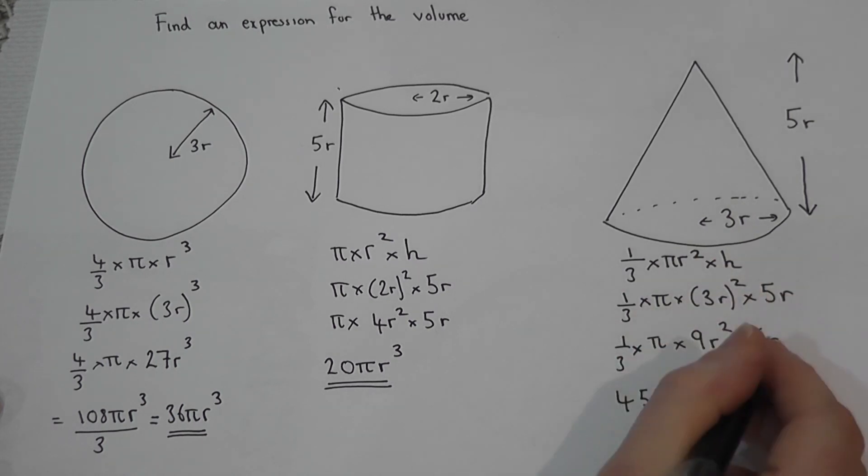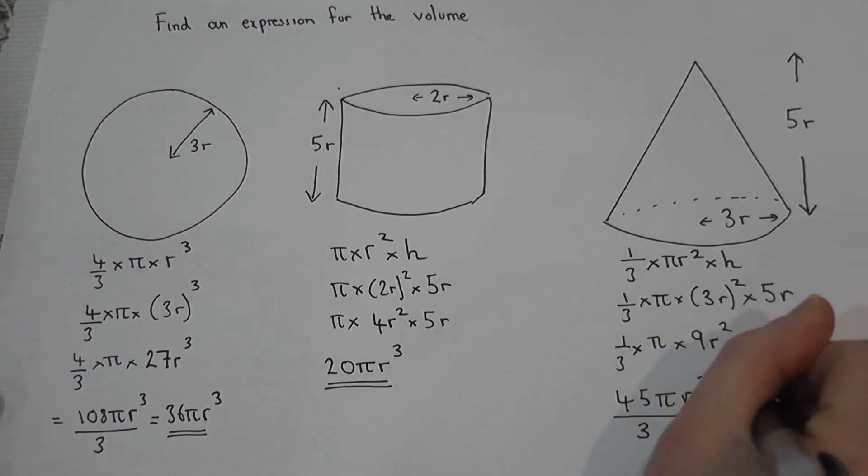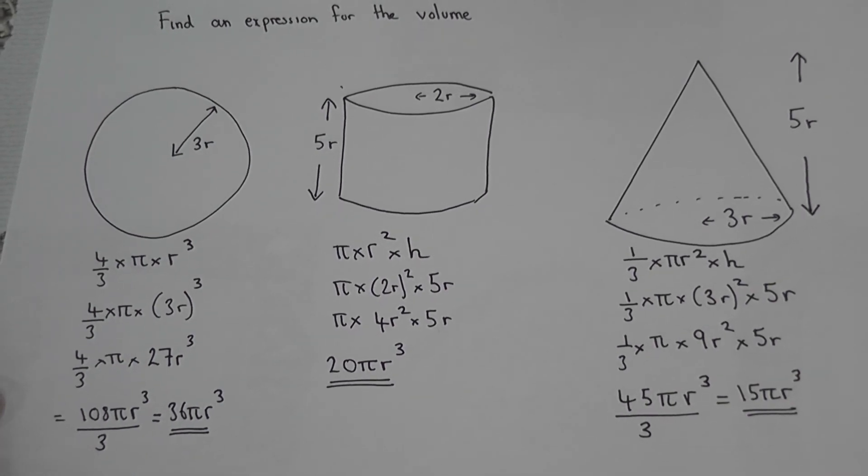So 1 times 9 times 5 over 3. And again, this can be simplified. There are 15 3s in 45, so 15 pi radius cubed. So a simplified expression for the volume of the cone, in this case, is 15 pi r cubed.